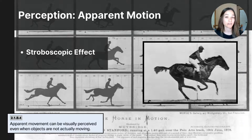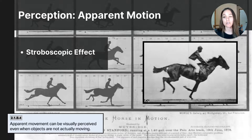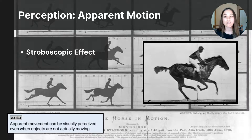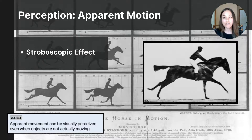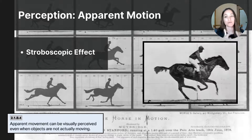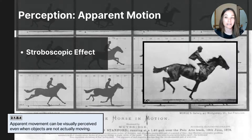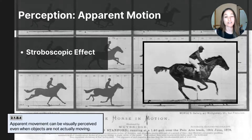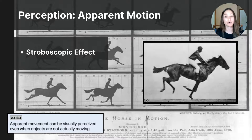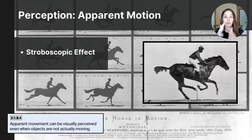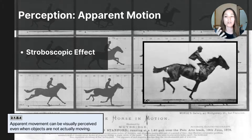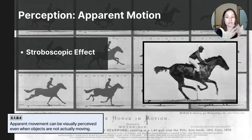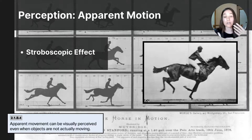The first example is the stroboscopic motion effect, which occurs when a series of still images or lights are flashed at a rapid rate, making it seem as if the images are moving continuously. In the late 19th century, Edward Muybridge, a pioneer in photography, set up a series of cameras along a track where a horse would run. Each camera was triggered in sequence as the horse passed by, taking photographs of the horse in different positions during its gallop. When these photographs are shown in rapid succession, they create an illusion of smooth, continuous motion — an early example of the stroboscopic motion effect.